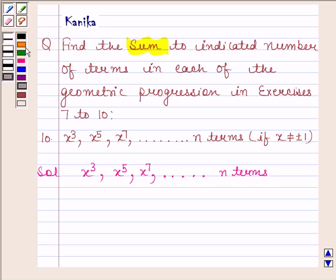Now here the first term, that is a, is equal to x to the power 3 and the common ratio, that is r, is equal to x to the power 5 upon x to the power 3, and this is equal to x square.